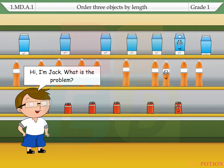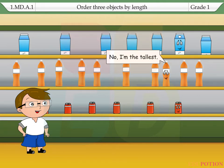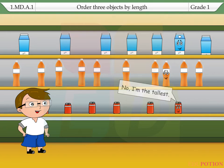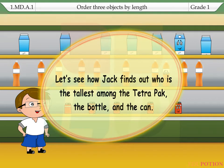Hi, I'm Jack. What is the problem? Can you tell who is the tallest among the three of us? It's me for sure. No, I'm the tallest. No, I'm the tallest. Okay, don't argue. I'll solve your problem. Let's see how Jack finds out who is the tallest among the Tetra Pak, the bottle, and the can.